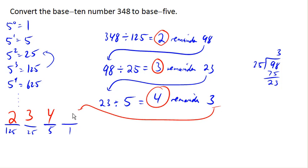And so in base 5, this number is 2, 3, 4, 3, base 5. That is the base 5 version of the base 10 number, 348.